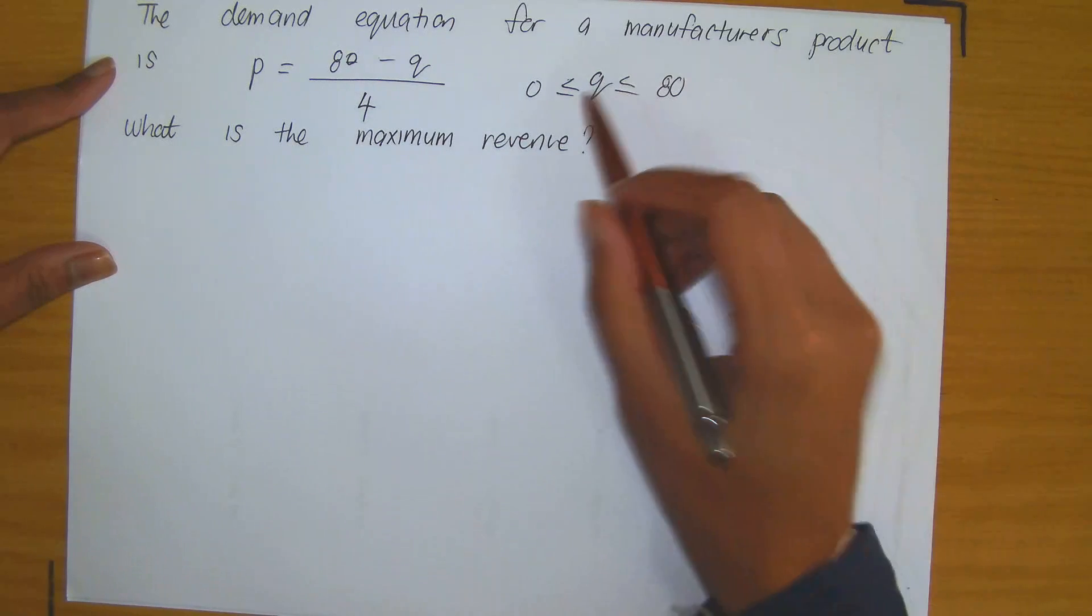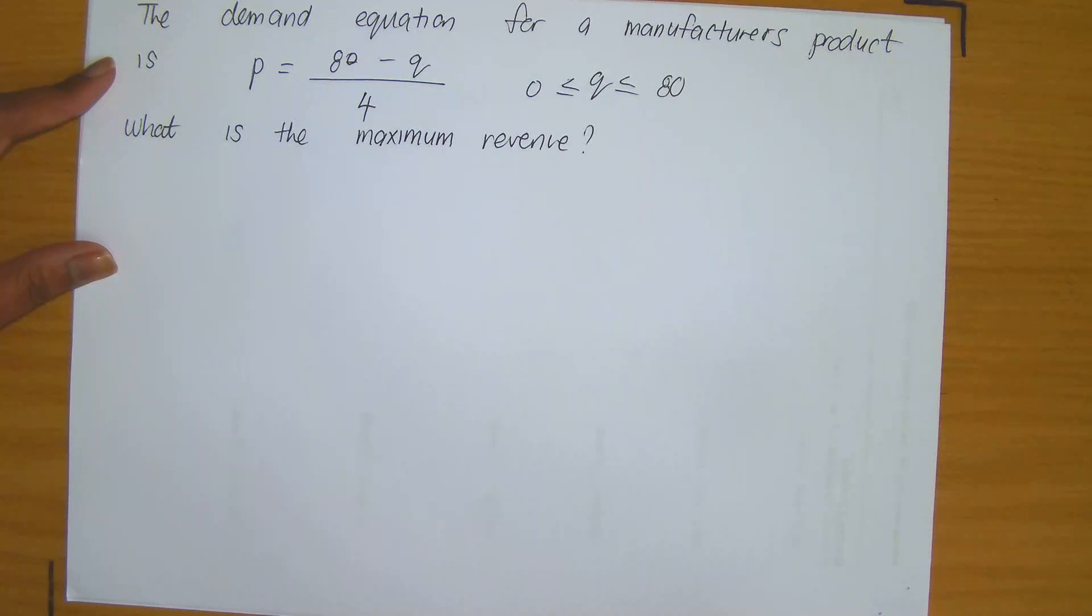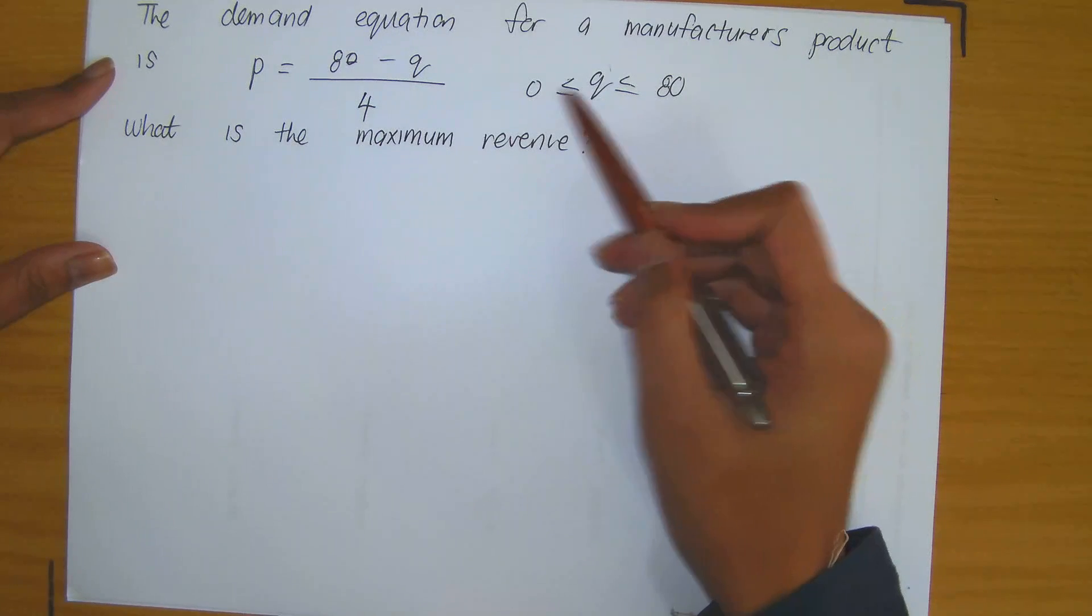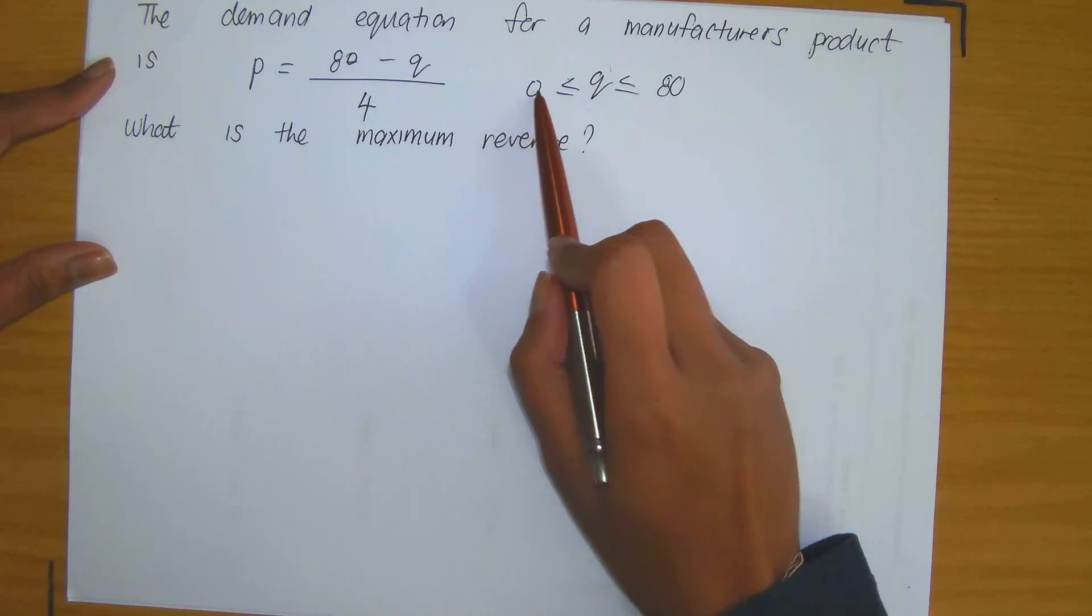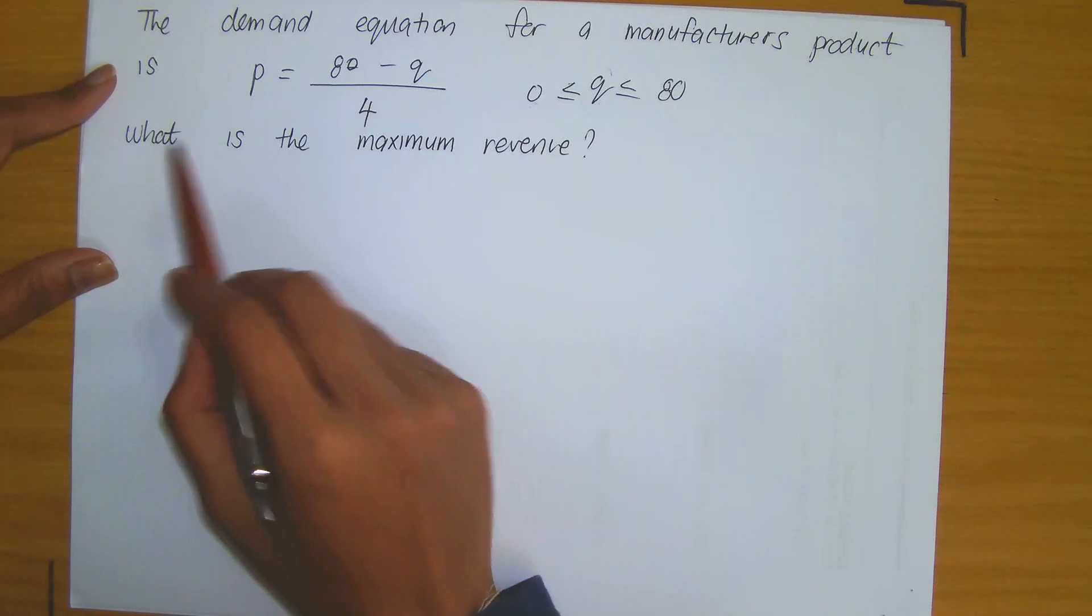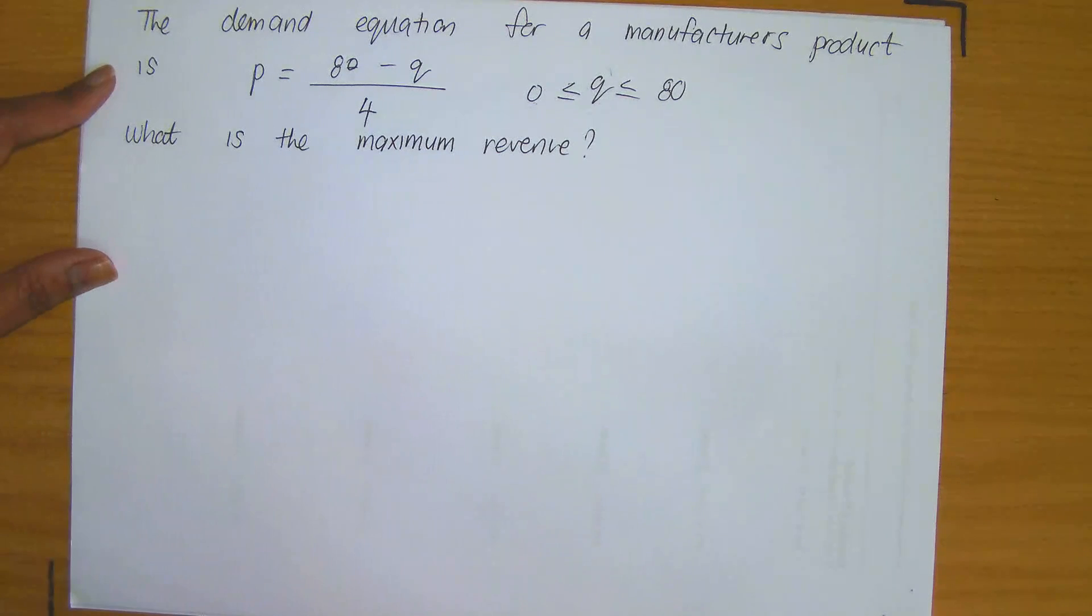Remember Q refers to quantity, so it's the number of units, and P refers to price per unit. So of course we require that quantity cannot be negative, hence it is bounded below by 0. So the question now is, what is the maximum revenue?